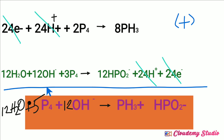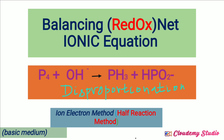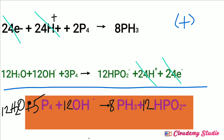On the product side, 8 molecules of phosphine (PH₃) and 12 molecules of hydrogen phosphite ions are the remaining products. This gives the resultant combined equation. The question states the reaction takes place in basic medium, so we need to check whether further adjustment is needed.